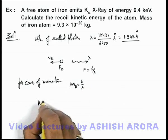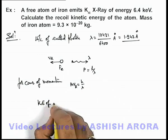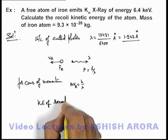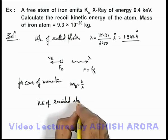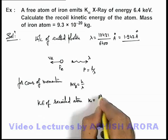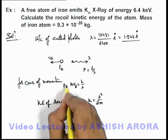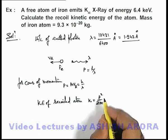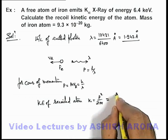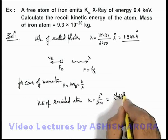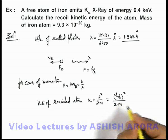If we calculate the kinetic energy of the recoiled atom, this kinetic energy can be simply written as p squared by 2m, where p is the momentum which is given by this expression. So this can be written as h by lambda squared, divided by twice the mass of the iron atom.